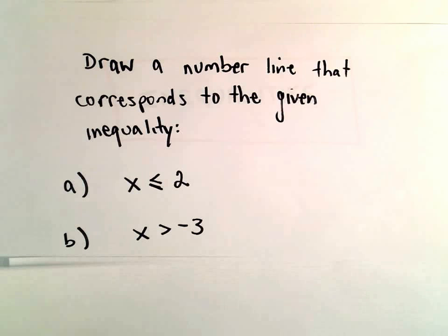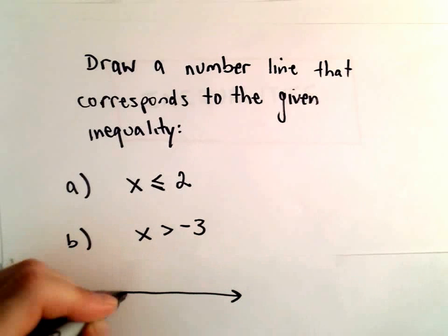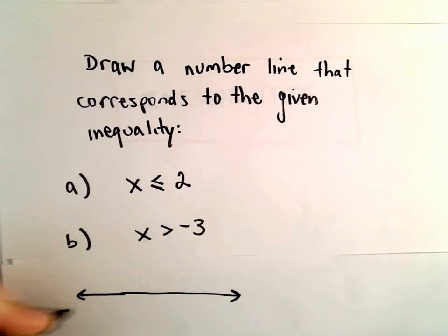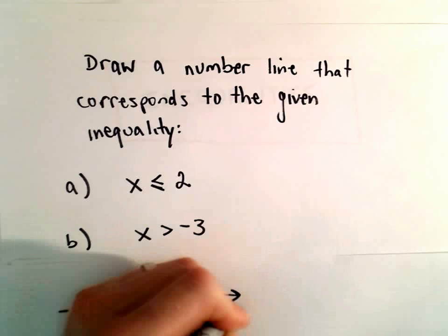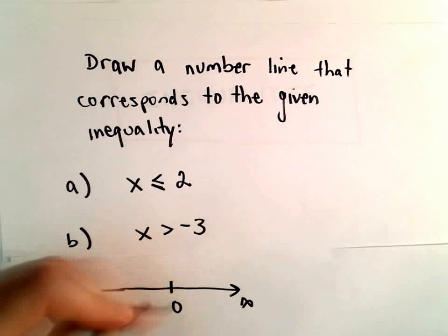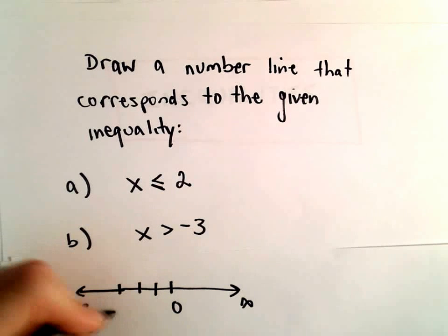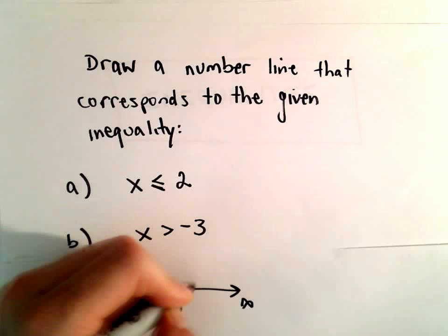In Part B, it says x needs to be greater than negative 3. So: negative infinity, positive infinity. There's 0, negative 1, negative 2, negative 3.